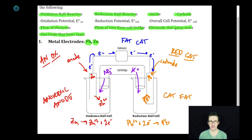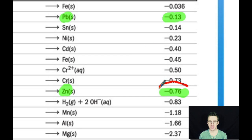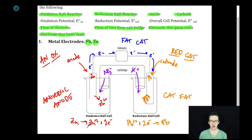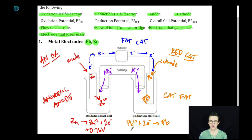I need to know the oxidation potential for zinc. As I go to my reduction potential list, remember we need to change the sign of this because this is a reduction potential list. So my oxidation potential is +0.76 volts. My lead is being reduced, so I'm just going to take that reduction potential as is: negative 0.13 volts. To determine the overall cell potential, we're just going to add those two together, which is positive 0.63 volts.